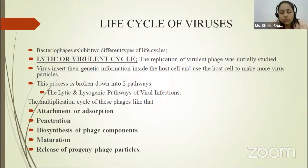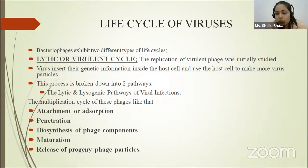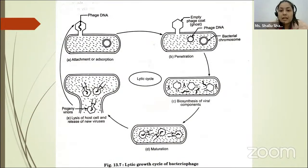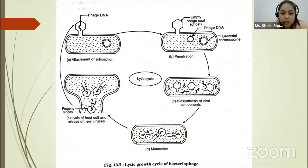Life cycle of viruses: how viruses replicate in host cells. There are two phases — the lytic and lysogenic pathways of viral infection. The steps of the multiplication cycle are: attachment or adsorption, penetration, biosynthesis of phage components, maturation, and release of progeny phage particles. In the first step — adsorption or attachment — the virus comes into contact with the host cell and adsorbs on the surface of the host cell.